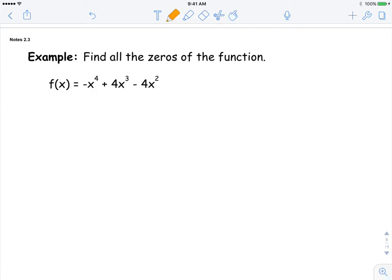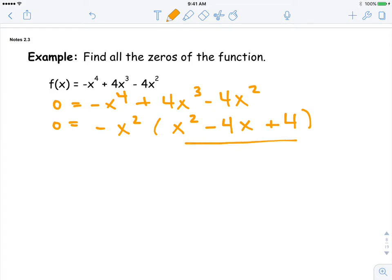Here's another example of finding all the zeros of the function. So we set the function equal to zero, and we factor it. We're going to take out the GCF first. So I'm going to take out a negative x squared. I'm left with x squared minus 4x plus 4. Then I look inside of this parentheses. This is a trinomial, leading coefficient of 1. So we say what are the factors of 4 that add to negative 4?